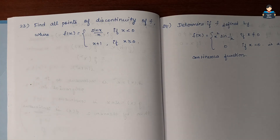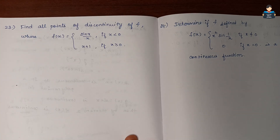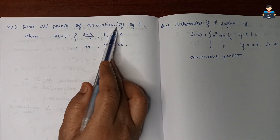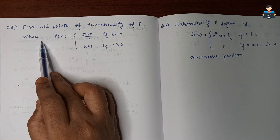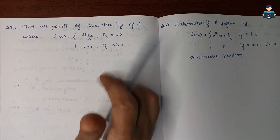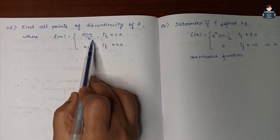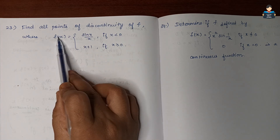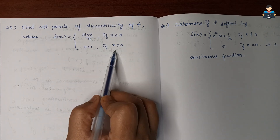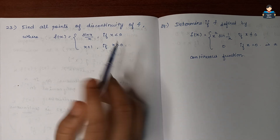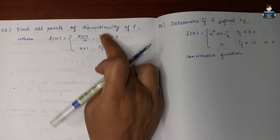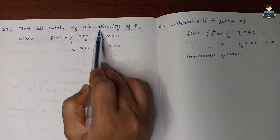Hello everyone, welcome to our channel. In this video, Class 12 NCERT Chapter 5 Continuity and Differentiability, Exercise 5.1, Question 23: Find all points of discontinuity of f, where f(x) = sin x / x if x < 0, and f(x) = x + 1 if x ≥ 0.